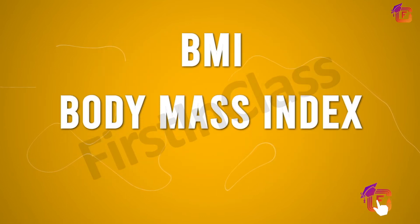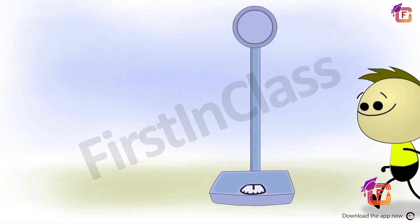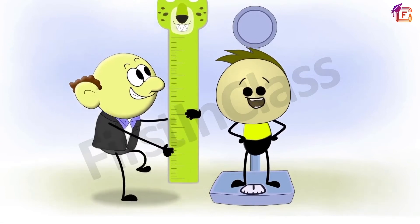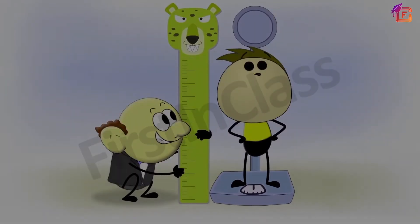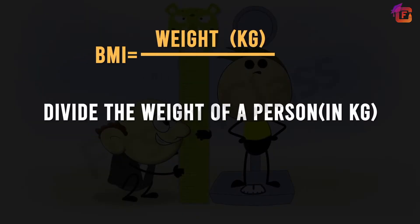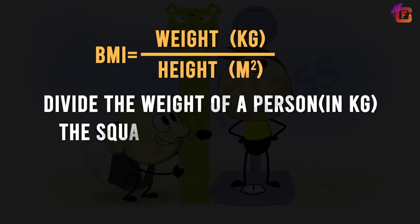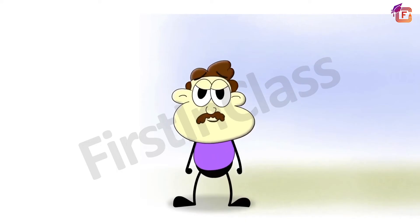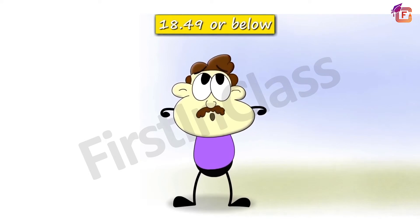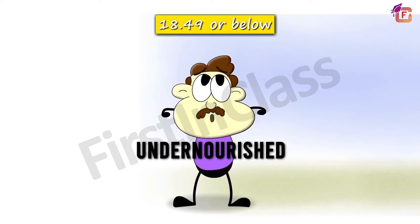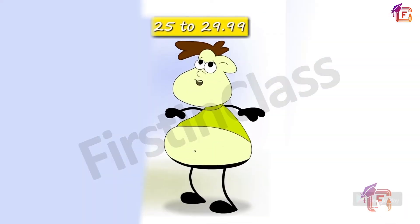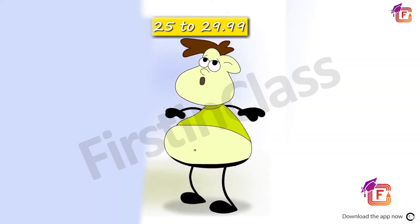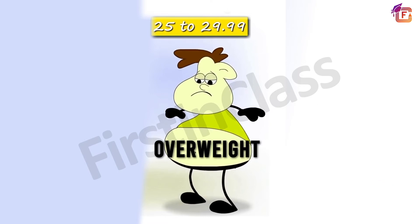The first term is BMI, which stands for Body Mass Index. BMI is a way to find out if adults are undernourished, by dividing the weight of a person in kg by the square of their height in meters. If this figure is less than 18.5, the person is considered undernourished. If the BMI is more than 25, the person is considered overweight.